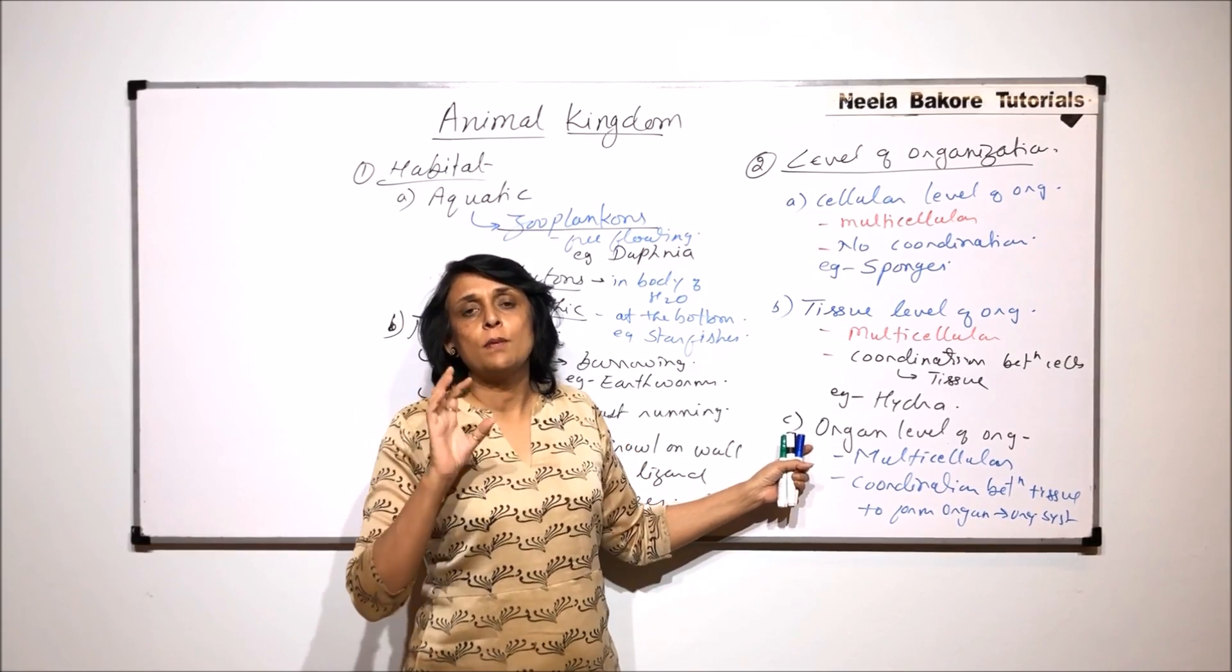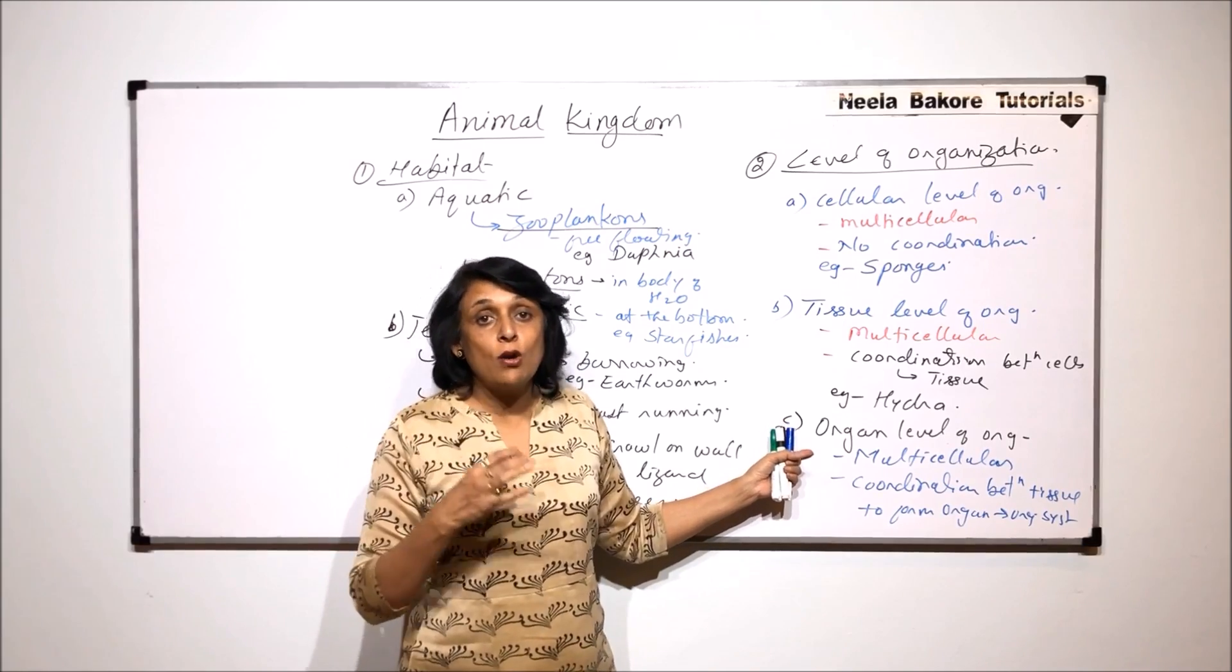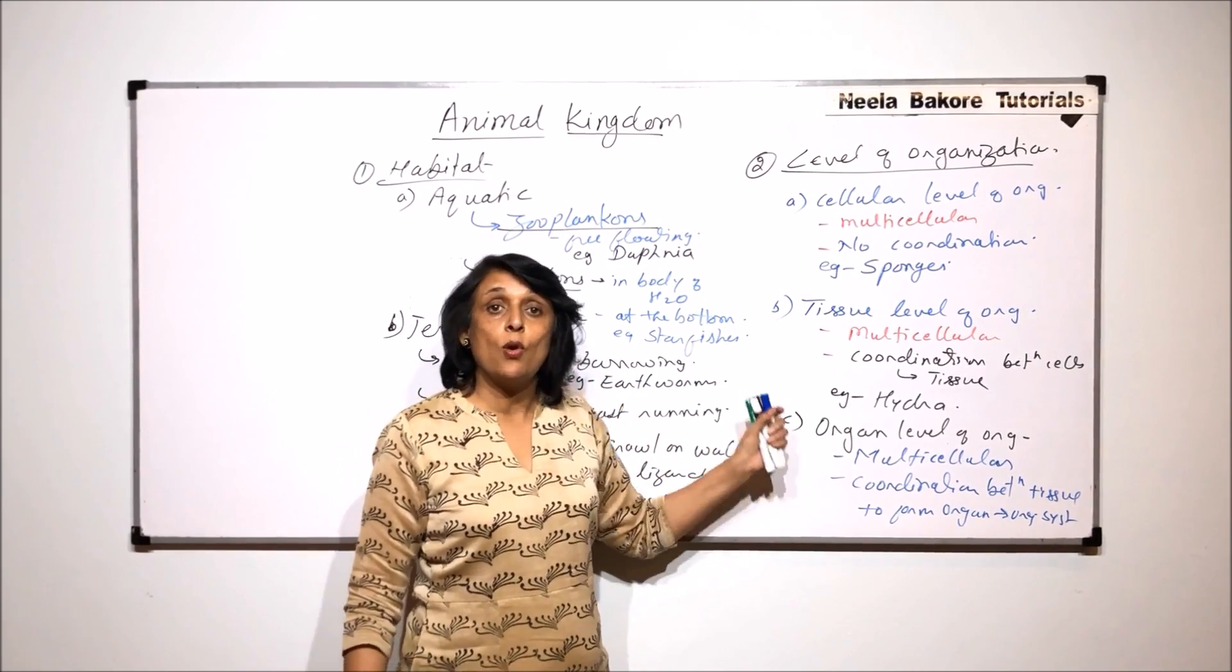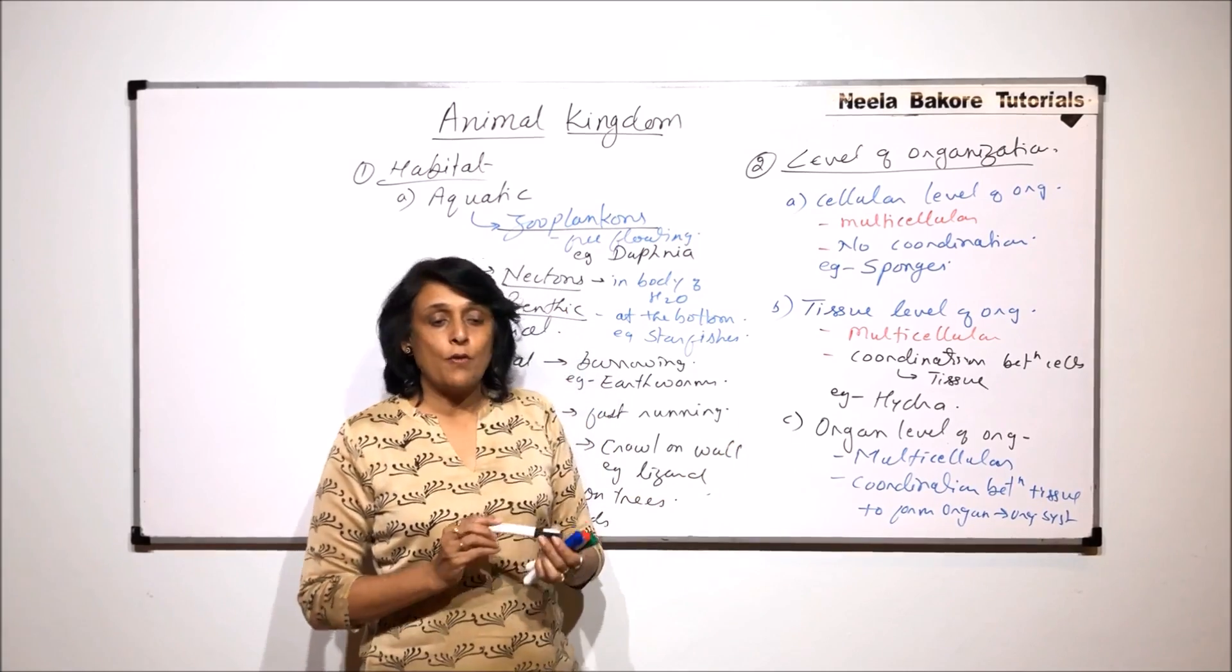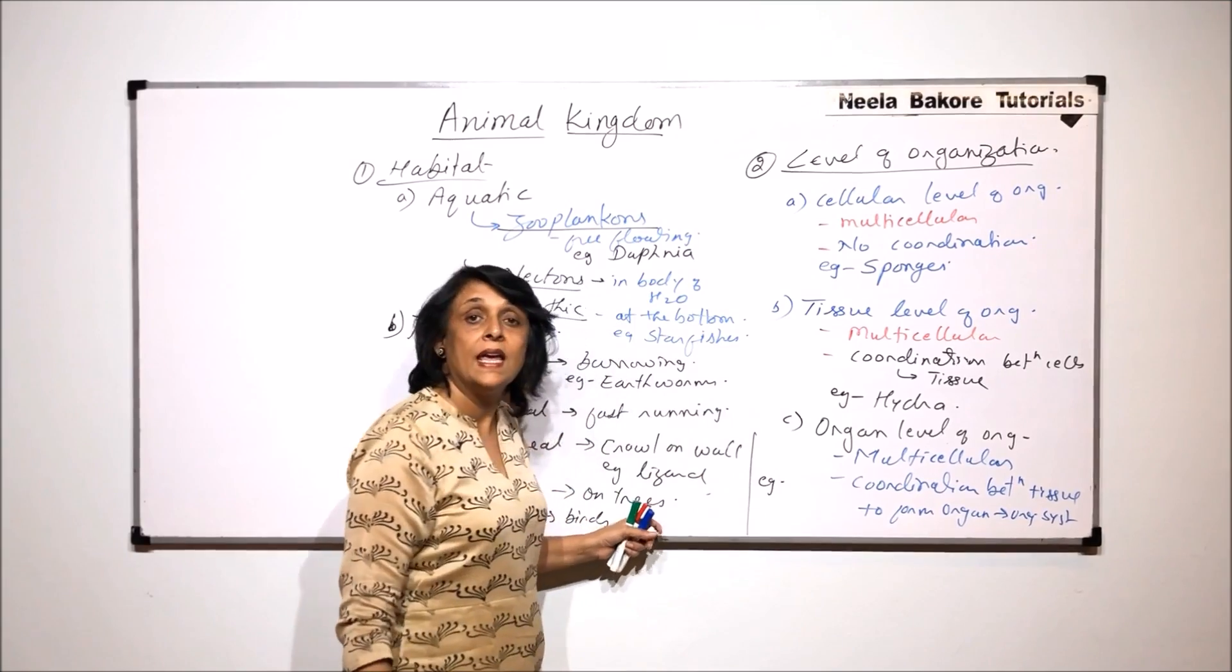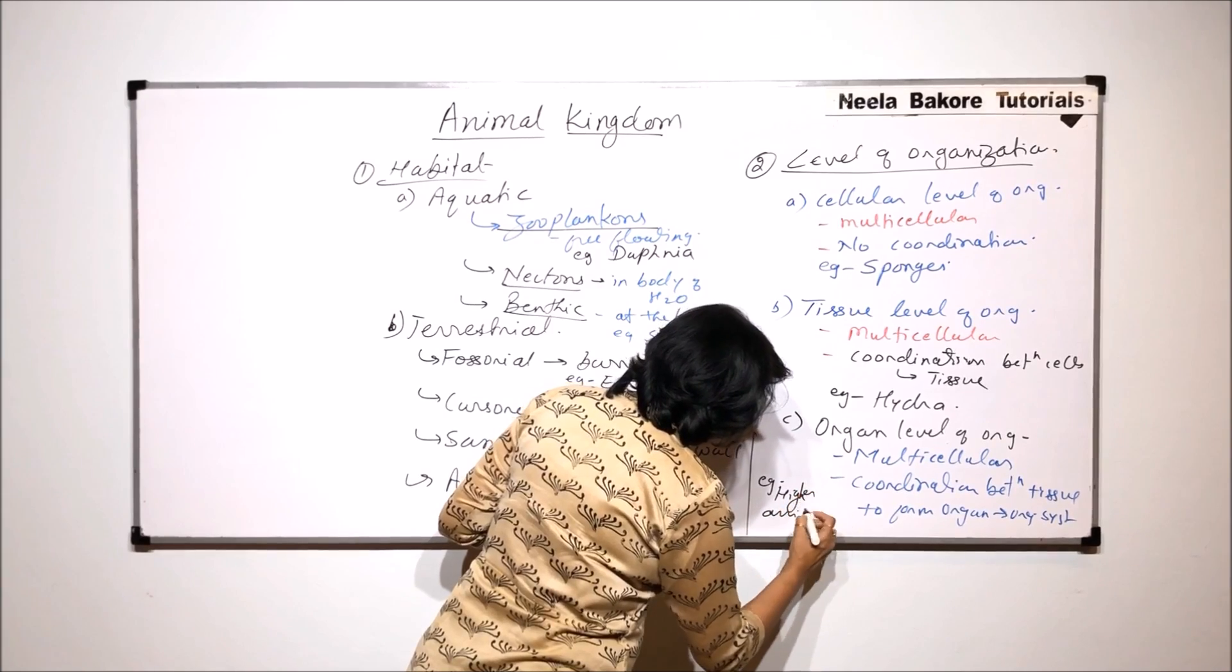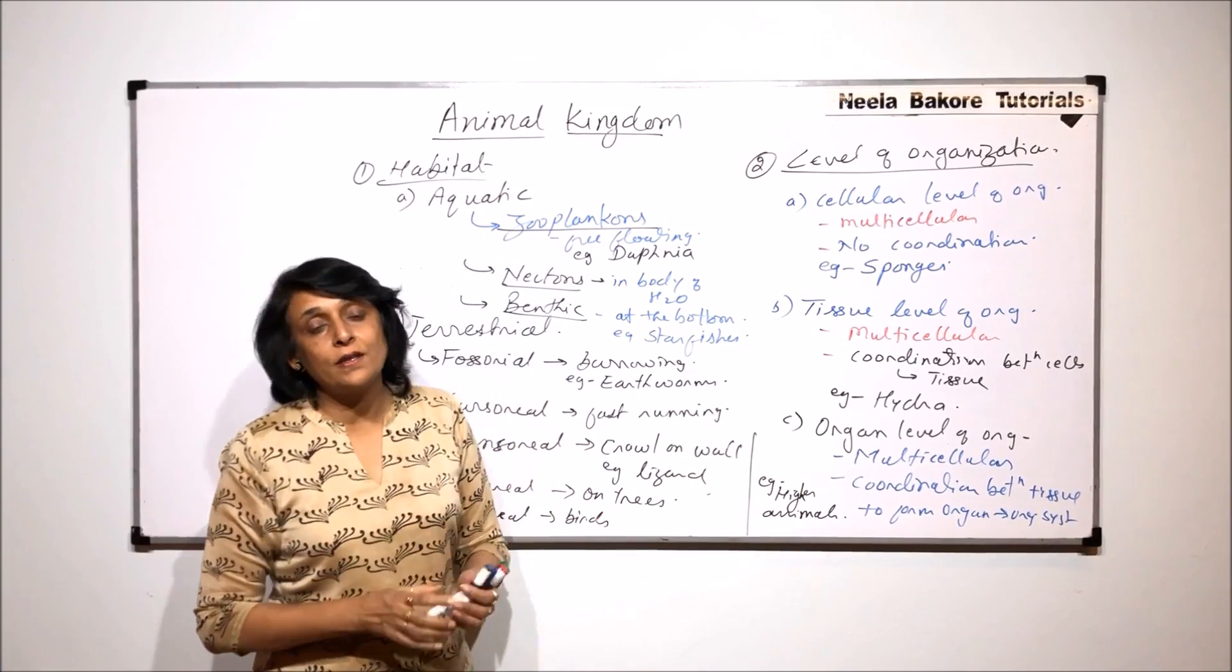That means if we are talking about excretory system, it will keep getting nourishment, it will keep getting oxygen. So they work in coordination. And the coordination is between the organs, and that forms a system. So organ level of organization. Here we can write the example is seen in all higher animals.